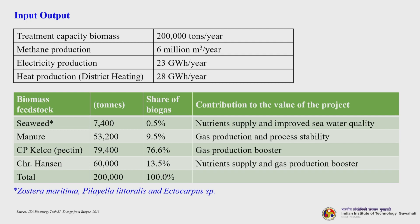Manure is also added, as well as CP Kelco (a pectin producer) and CHR Hansen, together adding up to 200,000 tons of feedstock. If you look at the share, the pectin-based feedstock contributes the largest share of biogas. Seaweed is not the major contributor to biogas; however, through this process they got rid of the entire odour problem and simultaneously produced fuel. Manure's contribution is in terms of gas production and process stability; pectin is a major gas production booster; and CHR Hansen provides nutrient supply and additional gas production boosting.